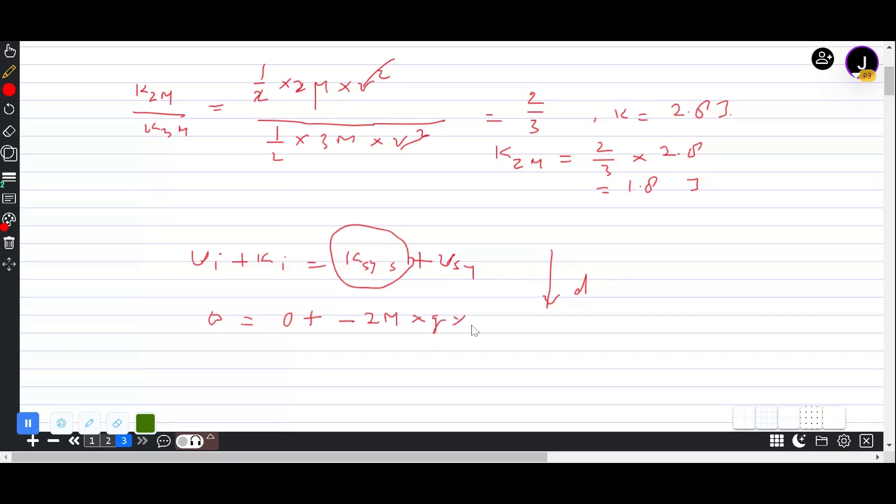And there's a gain in spring energy. So d is going to be k over 2. Sorry, d is going to be 2Mg over, into 2 over k, and that works out to...